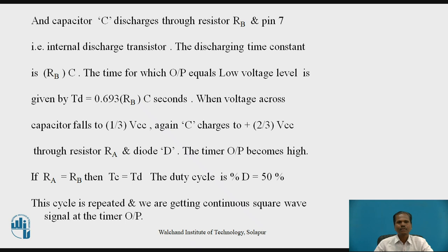If the two external resistors RA and Rb are selected such that RA equals Rb, then capacitor charging time Tc equals capacitor discharging time Td. Charging time equals discharging time, so the time duration for which the output remains high equals the time it remains low. Thus the duty cycle is 50%. This cycle is repeated and we get a continuous square wave signal at the timer output with 50% duty cycle.